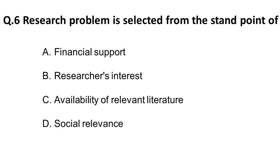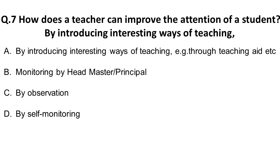The sixth question: a research problem is selected from the standpoint of what? The major and most important factor is the researcher's interest. You may have financial support, availability of relevant literature, and you may find it socially relevant, but if there is no interest it is impossible to do good research. Researcher's interest is the primary criterion for selecting a research problem. If you are not interested in a topic, after six months you will get bored and there will not be a fruitful outcome.